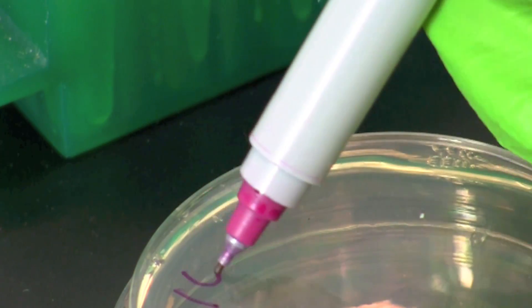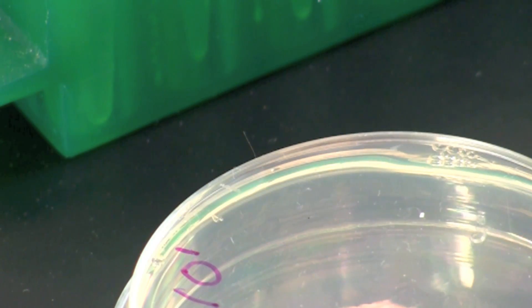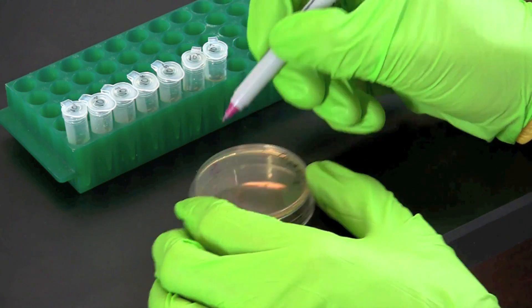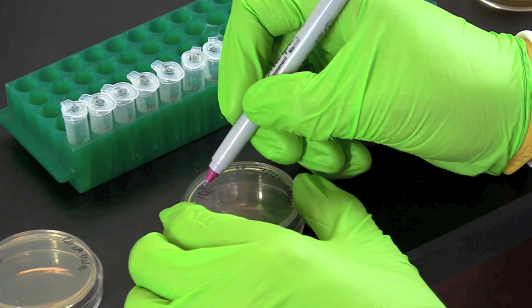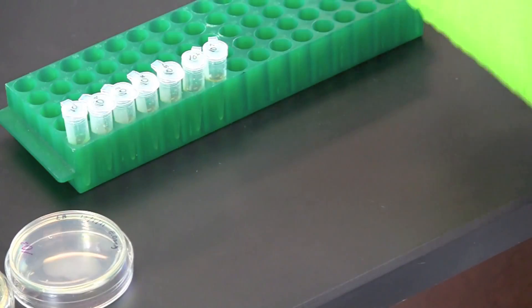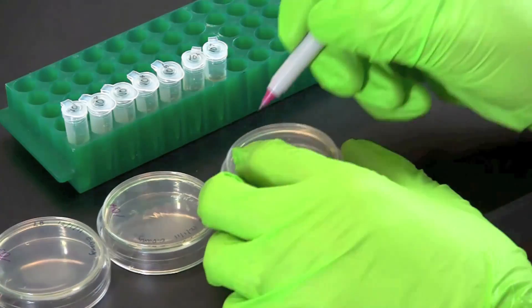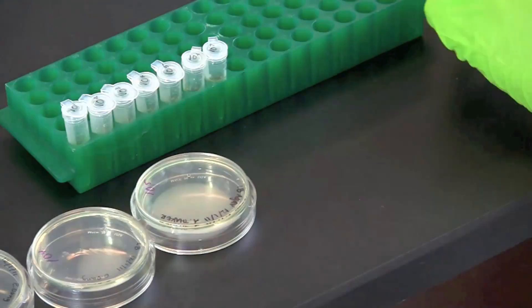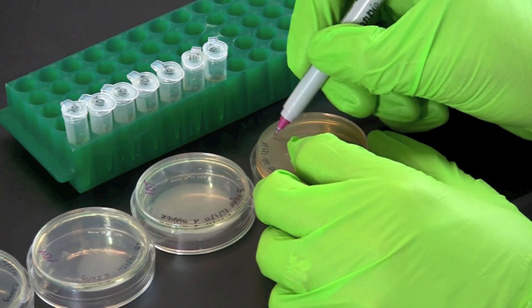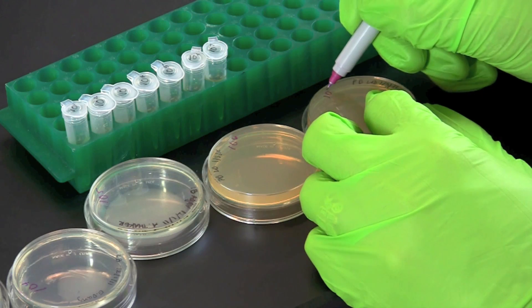Next label 7 LB agar plates on the bottom edge with the dilution factors: 10 to the 1st, 10 to the 2nd, 10 to the 3rd, 10 to the 4th, 10 to the 5th, 10 to the 6th, and 10 to the 7th.